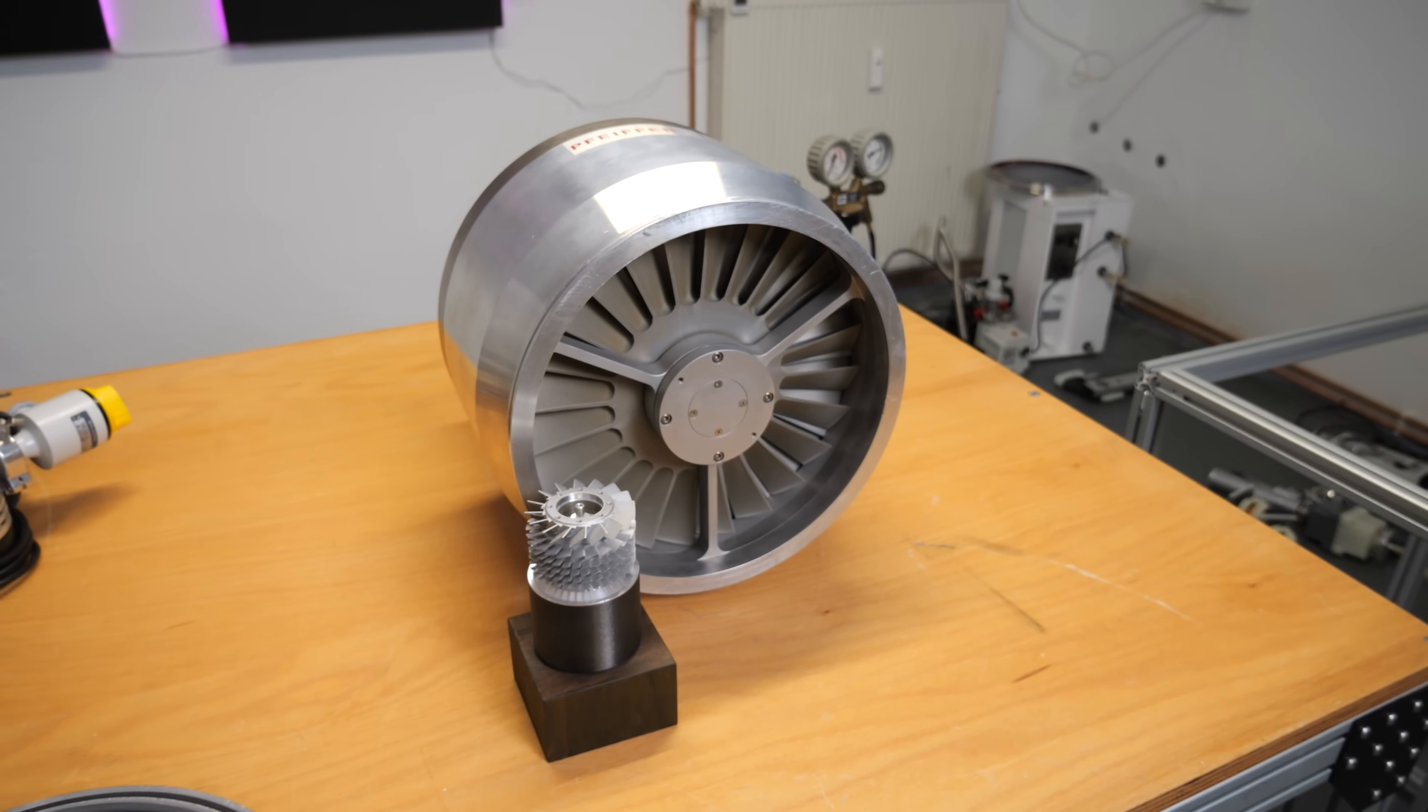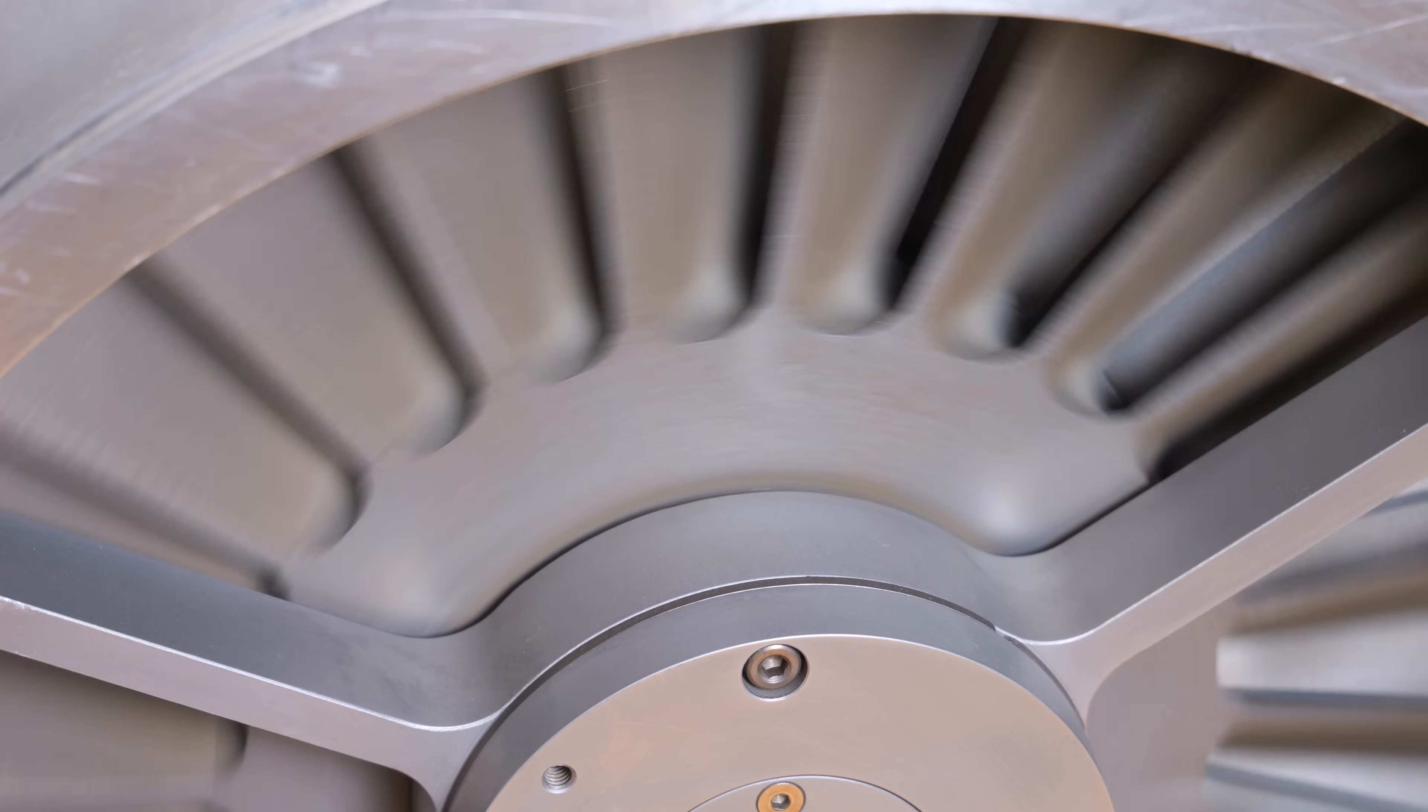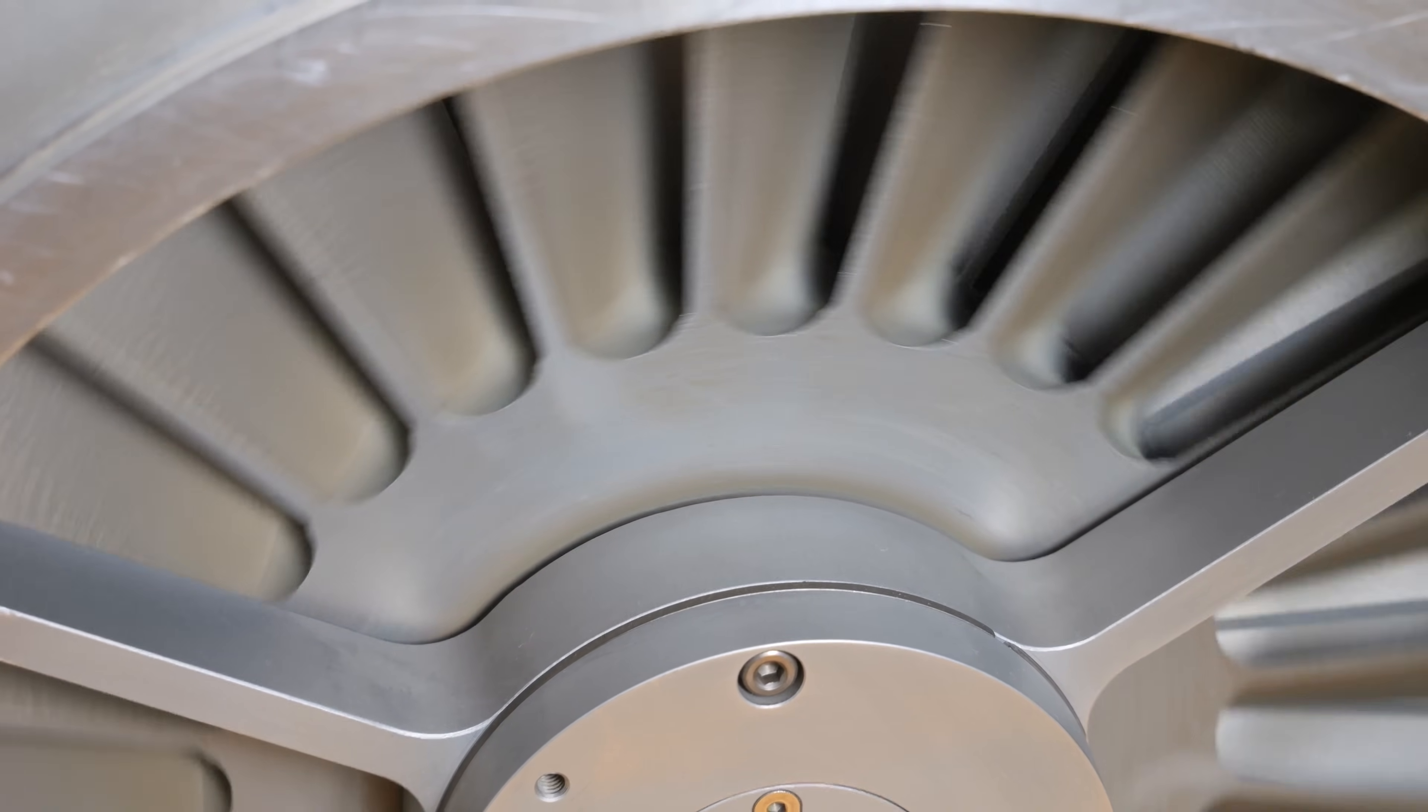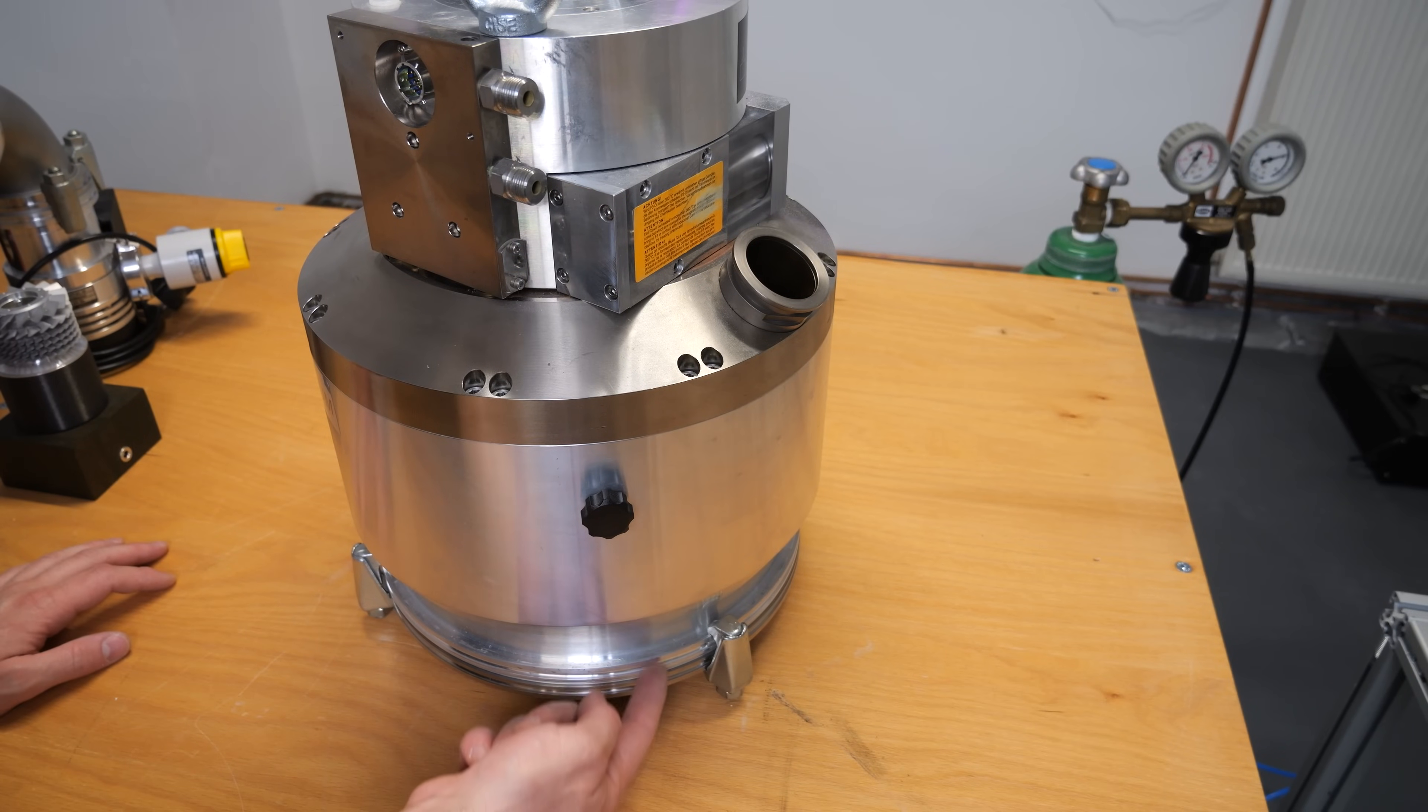Once a particle reaches the turbomolecular pump, the impulse of the rotor blades is transferred to the gas particle, essentially directing them downwards. Thus, the turbomolecular pump compresses the gas particles in the vacuum chamber, allowing them to be evacuated by the rotary vane pump.